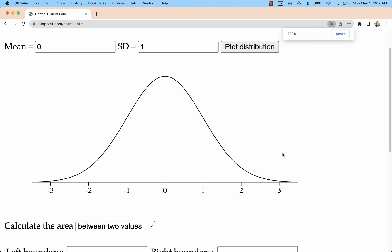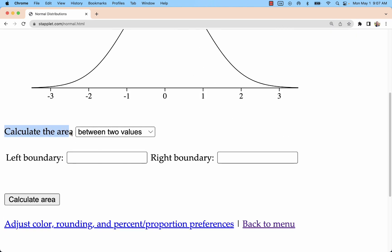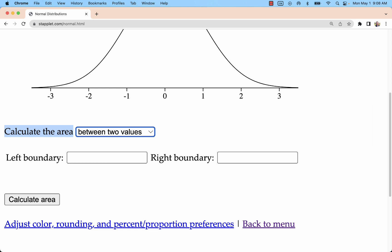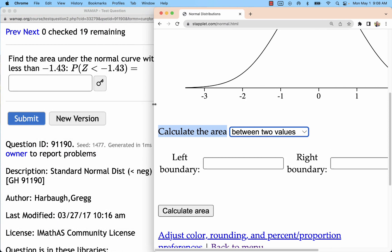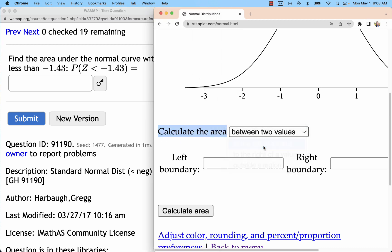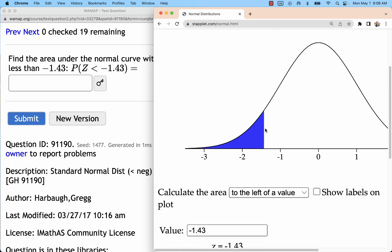That draws the curve. Down at the bottom is where we have our operation to calculate the area and we have several options. The first problem we're going to look at is finding the area under the curve with z scores less than negative 1.43, or probability that z is to the left or less than negative 1.43. Think of the less than sign as like an arrow pointing to the left. We put in our negative 1.43 and we can see that area.